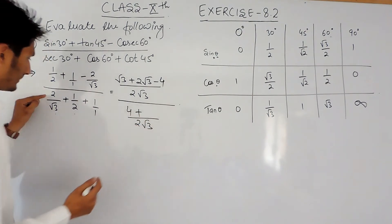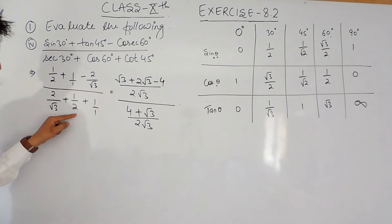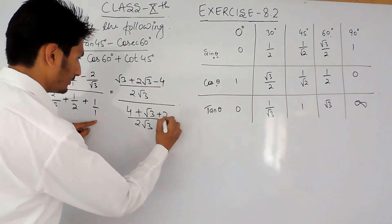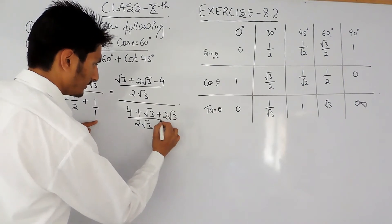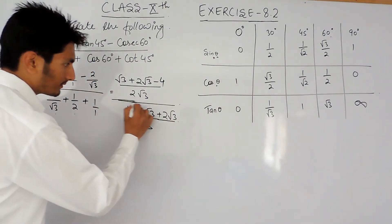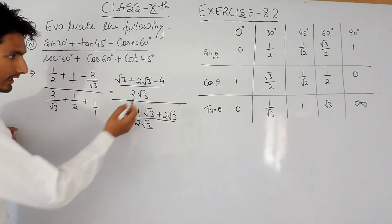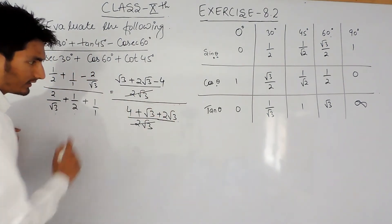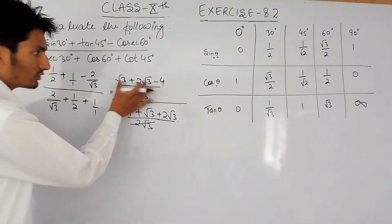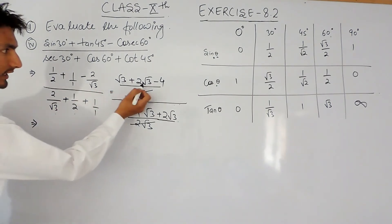After simplification, in the numerator we get 4 plus root 3, and the denominator is 2 root 3. The fractions with the same denominator can be cancelled, giving us the combined expression.